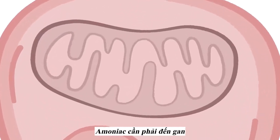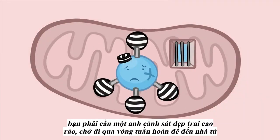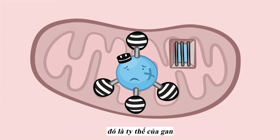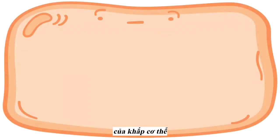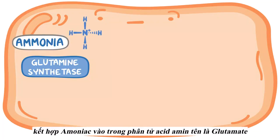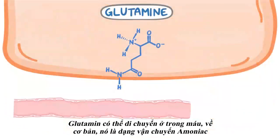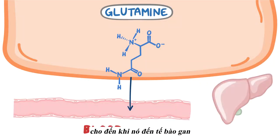Ammonia needs to get to the liver, and it has to be done carefully because it's toxic. There are two ways this can happen. The first way is used by cells throughout the body. The enzyme glutamine synthetase adds ammonia to the amino acid glutamate, forming glutamine. Glutamine can move into the blood and essentially transport ammonia around the block until it gets to a liver cell.